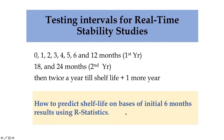This is the testing interval for the real-time stability study test. We have to test initially and at each point for six months, then at 12 months in the first year, after 18 months and 24 months in the second year, then twice a year till the shelf life, plus one more month. We will also show how to predict shelf life on the basis of initial six-month results using R statistics.